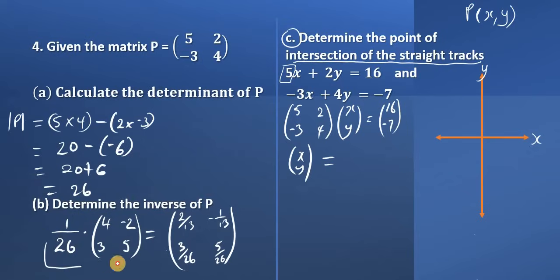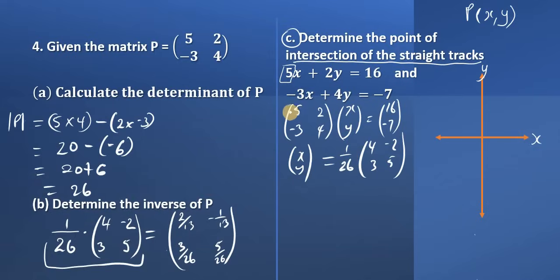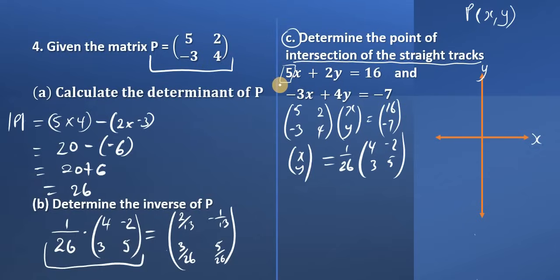Where is A inverse? Well, we worked out A inverse already — it's 1 over 26 times the adjoint with entries 4, negative 2, 3, and 5. If you look at this, 5, 2, negative 3, and 4 — this A matrix is really matrix P that was given earlier in part A, the same matrix. So typically that's what they do: they give you the 2 by 2 matrix, then when they give you the simultaneous equations you realize you had this matrix before. So the same A matrix here has the same components, and therefore if asked to find the inverse, you already found it.